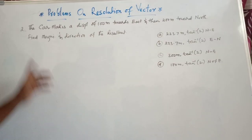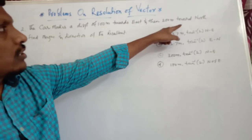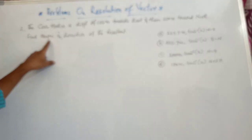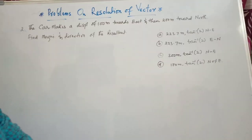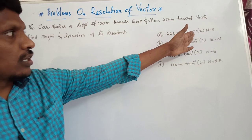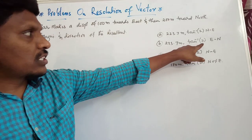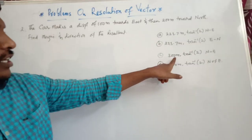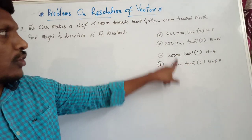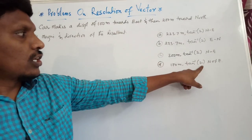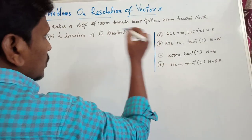Second question: a car makes a displacement of 100 meters towards east, then 200 meters towards north. Find the magnitude and direction of the resultant. The given options are: 223.7 meters, tan inverse 2, northeast direction; 223.7 meters, tan inverse, east-north direction; 300 meters, tan inverse 2, northeast direction; or 100 meters, tan inverse 2, northeast direction. Let us see which is correct.